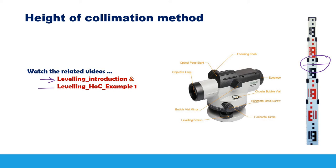In the second video I introduced the height of collimation method for calculating the reduced levels. I explained how to book the readings and also how to do the calculations. Today I'm going to continue on the height of collimation method through another new example, and after the bookings and calculations I'm going to show you how to check the calculations and make sure all of your calculated numbers are correct.